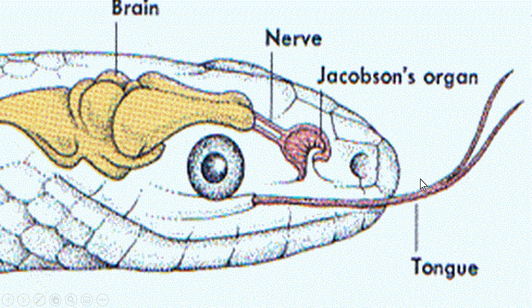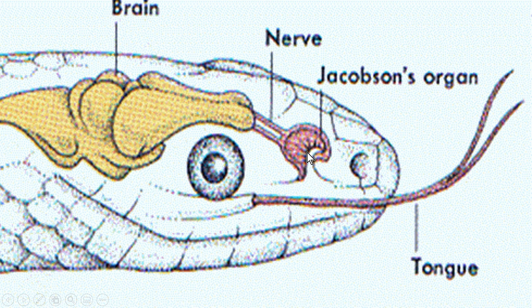Actually hota kya hai ki snake jitni bhi air apni tongue se collect karta hai, usko apne mouth ke andar le aata hai. Aur snake ke mouth ke andar, roof side mein ek organ hota hai jiska naam hai Jacobson's organ. Friends, yahi wo organ hai jisko snake use karta hai smell ko sense karne ke liye. Jitni bhi air snake ke mouth ke andar aati hai, wo kuch holes ke through Jacobson's organ ke paas pahunchti hai, jisse snake usko sense karta hai.